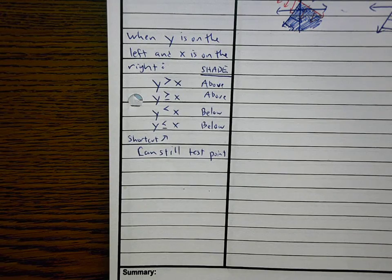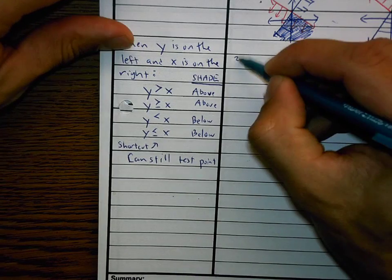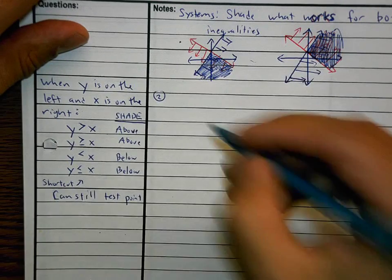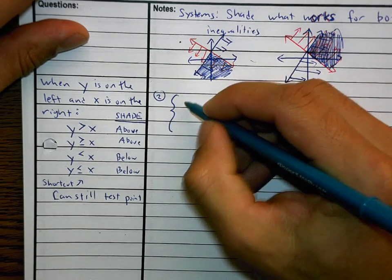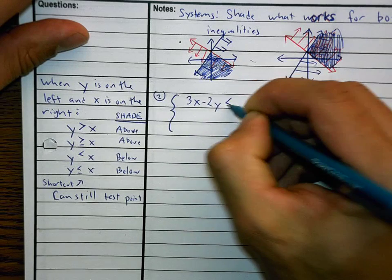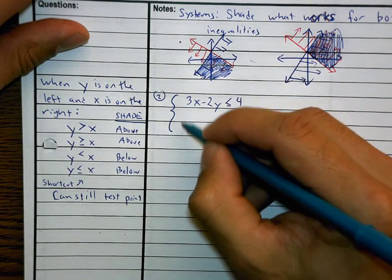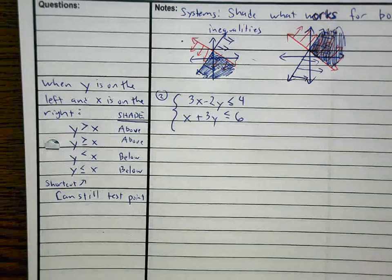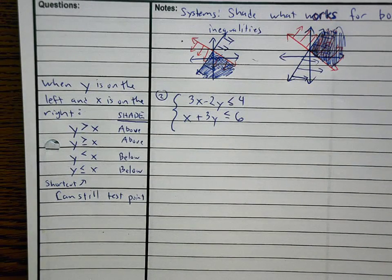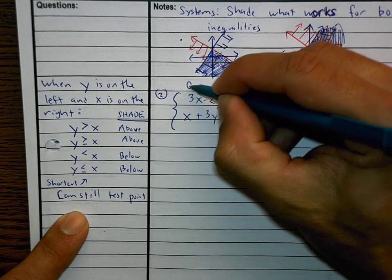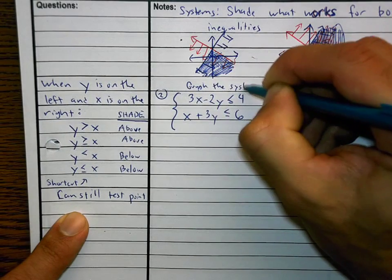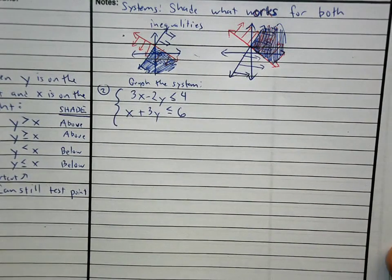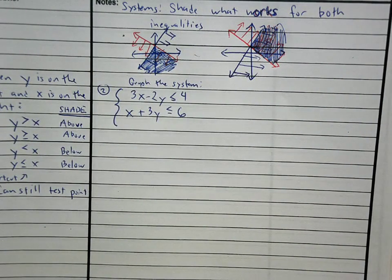Number 2 on your next worksheet will look like this. Sometimes they have these little curly braces with them. 3X minus 2Y is less than or equal to 4. X plus 3Y is less than or equal to 6. And it's going to say graph the system. Now the issue with this is just like you had before. 3X minus 2Y is less than or equal to 4. X plus 3Y is less than or equal to 6. Focus.